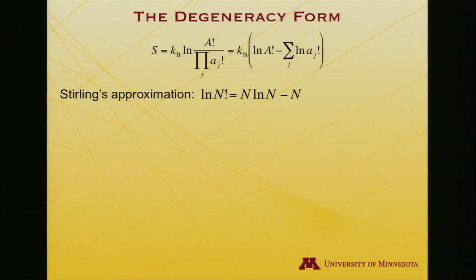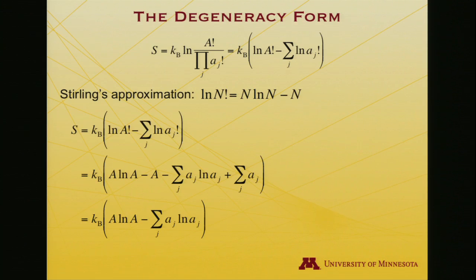So once you know what n is, it's trivial to work out log of n factorial. And so if I use that approximation, what do I get here? When I transform log of a factorial to n log n minus n, I'll get an A log A minus A.